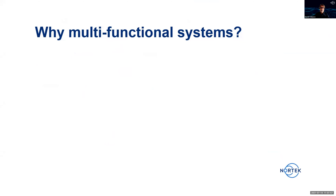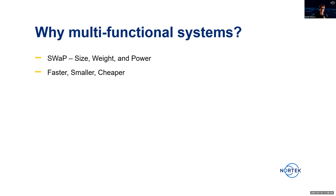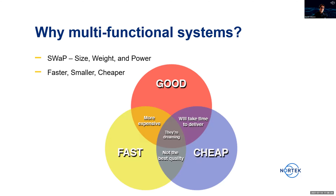Now, why do we make multi-functional ADCP systems? You might have heard of the acronym SWAP, which stands for Size, Weight, and Power — basically meaning we want things that are smaller, lighter, and that can last a long time on a charge, not unlike mobile phones. Another way people describe this is that you want something faster, smaller, and cheaper, which introduces a price component as well.